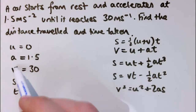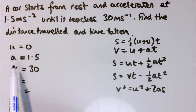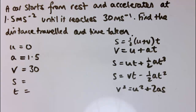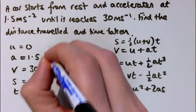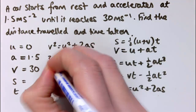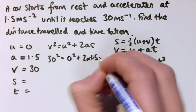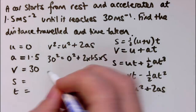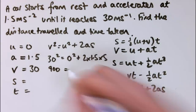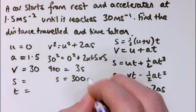I've got u, a, and v, and I want s, so I need to look at the equations and find which one has u, a, v, and s in it. That's v squared equals u squared plus 2as. Substituting in: 30 squared equals 0 squared plus 2 times 1.5 times s. So 900 equals 3s, meaning s equals 900 over 3, which is 300 metres.